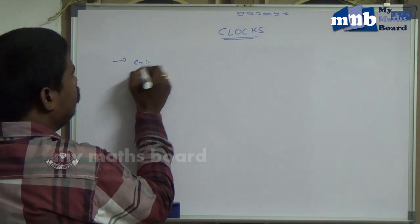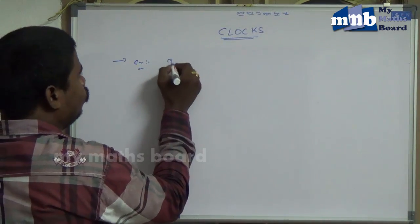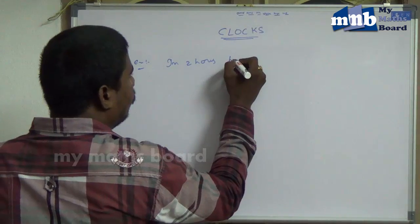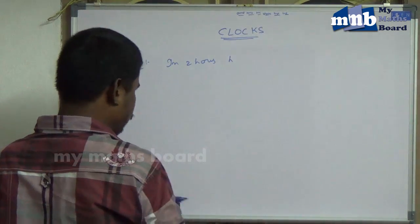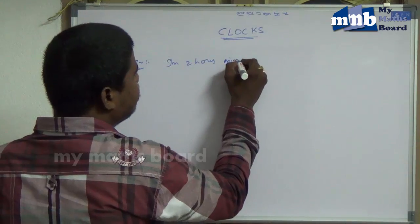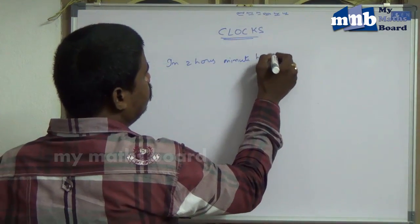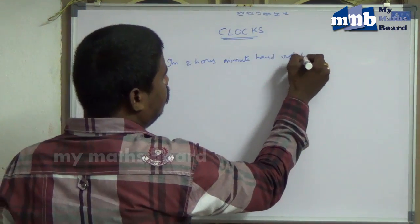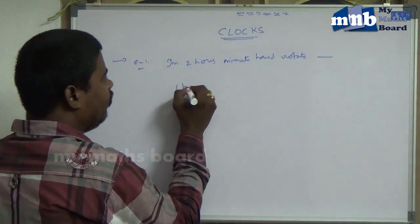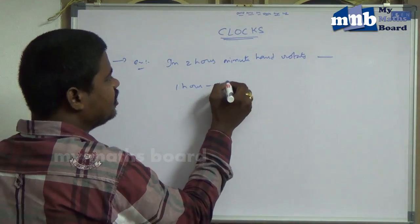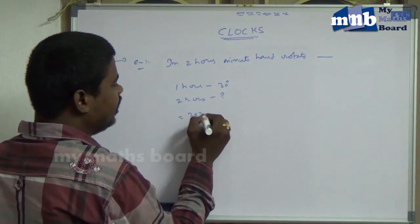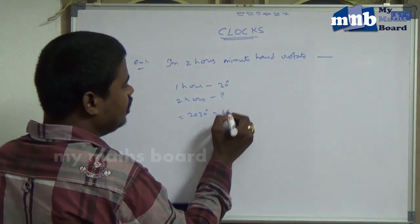Next example: in two hours, the minute hand rotates — according to our theory, one hour carries 30 degrees. So two hours means two into 30 degrees, which is 60 degrees.